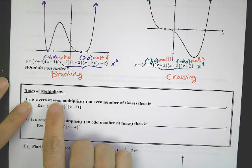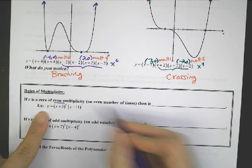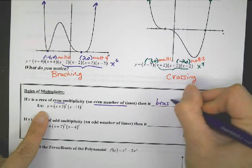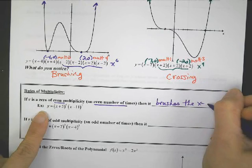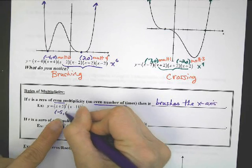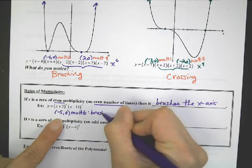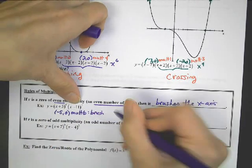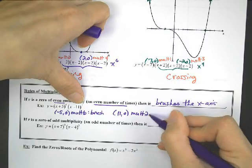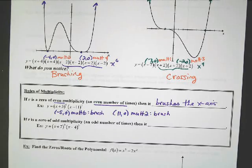If r is a zero of even multiplicity — an even number of times — then it brushes the x-axis. For example, right here, this is negative 5, 0 with multiplicity 6, so therefore that one would brush. How about this x-intercept? 11, 0 has multiplicity 2 times. And since 2 is an even number, it would also brush the x-axis at that x-intercept.